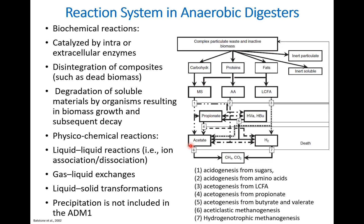Longer-chain fatty acids can be converted to shorter-chain fatty acids, and these can go through a process called acetogenesis to produce acetic acid, hydrogen, and carbon dioxide. At the end there is methanogenesis, which converts acetate, hydrogen, and carbon dioxide to methane.